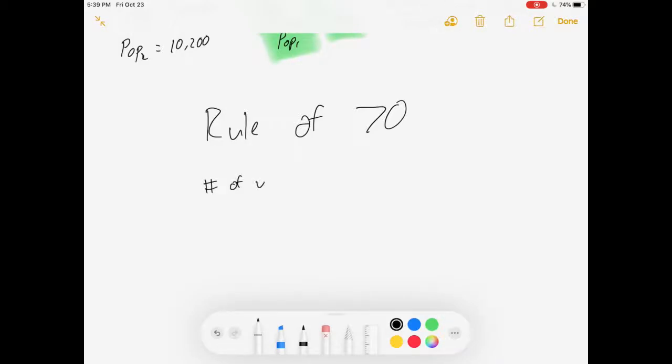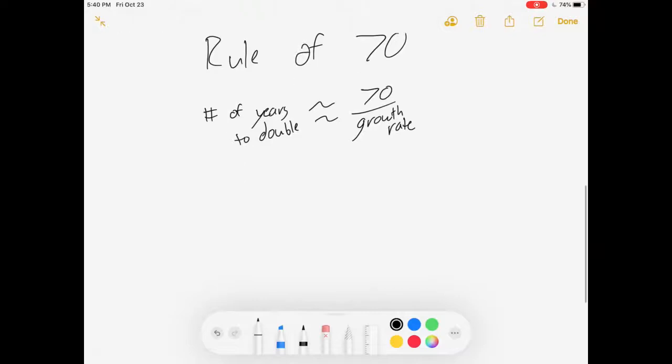It's the number of years to double is approximately equal to 70 divided by your growth rate. Now, just for the sake of having some shorthand, I'm going to call this D, the number of years to double, equals 70 over G.